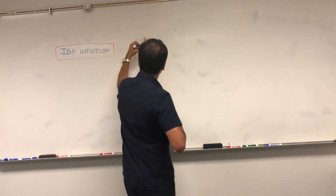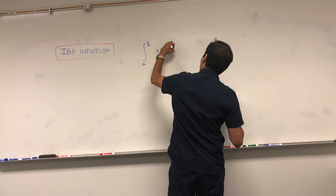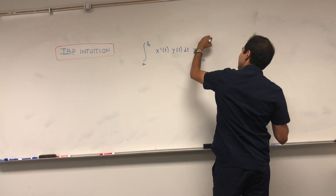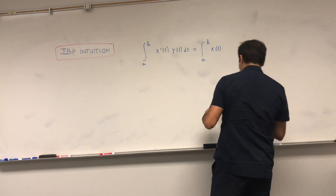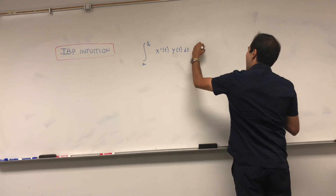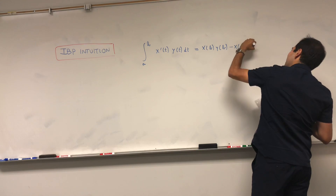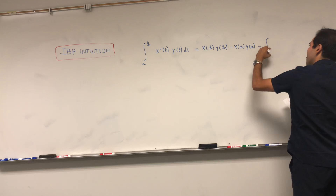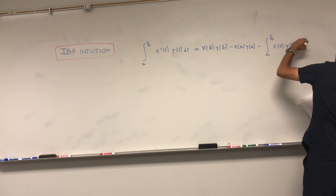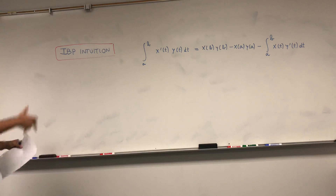What I want to show you is basically that the integral from a to b of x prime of t times y of t dt equals x of b times y of b minus x of a times y of a minus the integral from a to b of x of t times y prime of t dt, where x and y are functions of t.